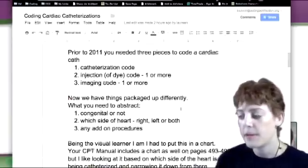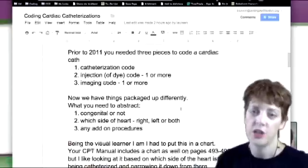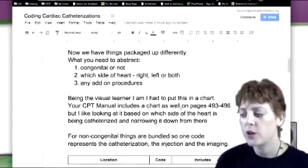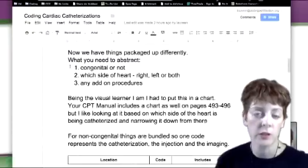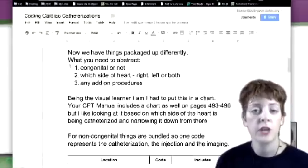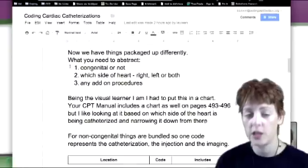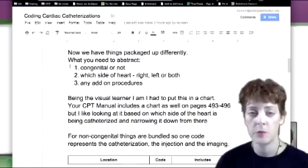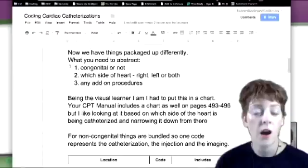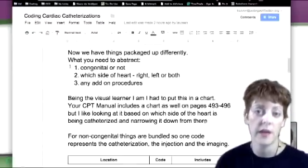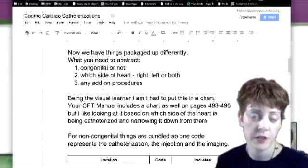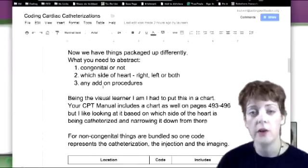So in 2011, they came out with packaging these cardiac cath codes. So what you need to actually go in and abstract for when you're looking at a cardiac cath report is was it for a congenital reason or not because that's going to change how you do your coding. That's the number one thing you need to figure out. Then you need to figure out which side of the heart was catheterized. Was it the right, the left or both? And then the last thing was are there any add-on procedures that were done that you're allowed to code as well?